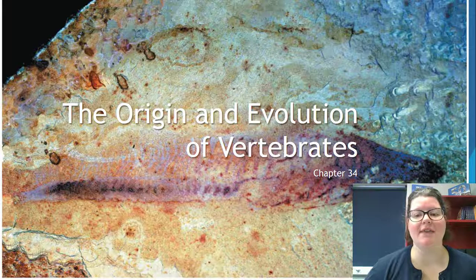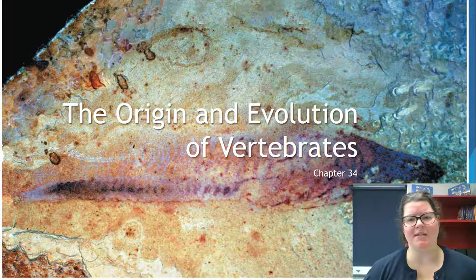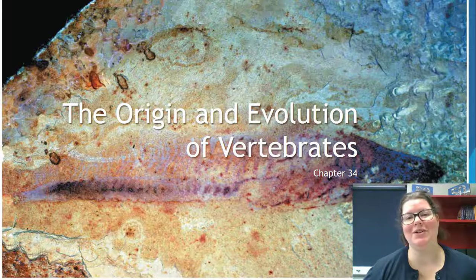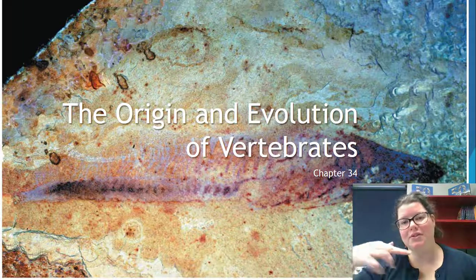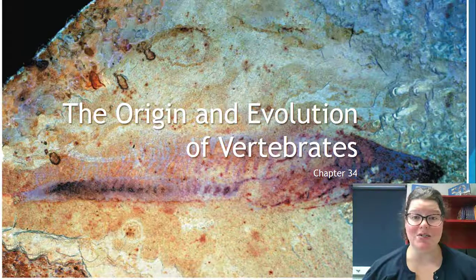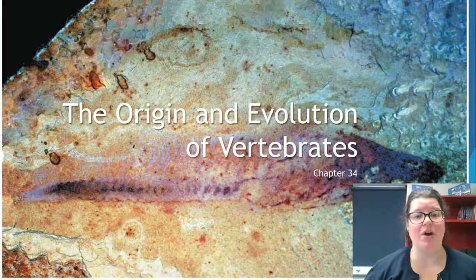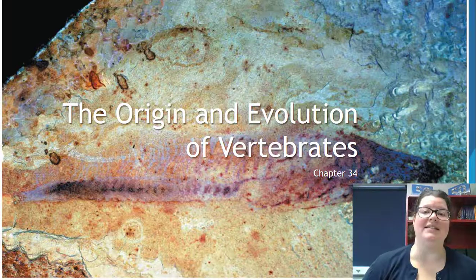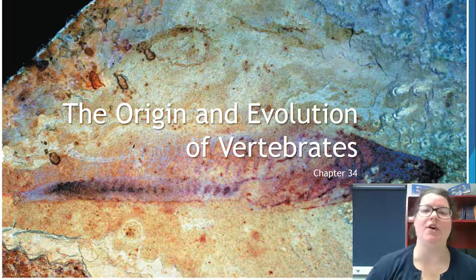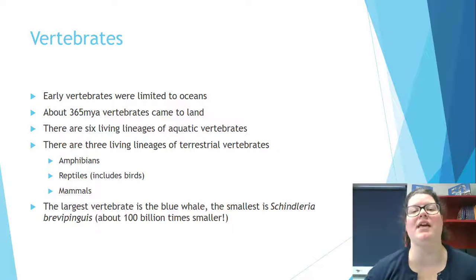Today we're going to talk about the origin and evolution of vertebrates. We ended with invertebrates, which are those basal lineages starting with sponges. When we talk about vertebrates, we're not really talking about vertebrae — those little knobby things in your spine — but rather anything with a spinal cord. Spinal cords actually didn't start as spinal cords; they started as something called the notochord, which you had when you were in development in the womb.